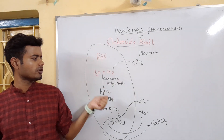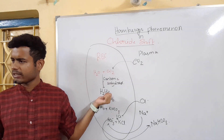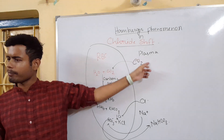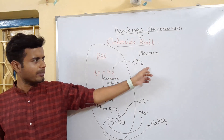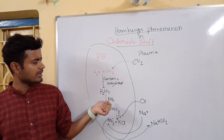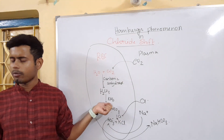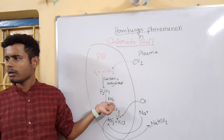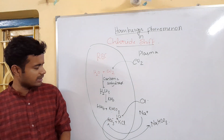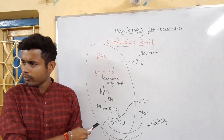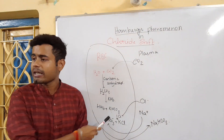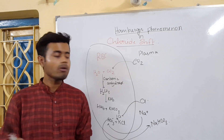It will combine H₂O and CO₂ into carbonic acid, H₂CO₃, and the CO₂ is coming from plasma. After forming carbonic acid, potassium attached to hemoglobin would react with it, and reduced hemoglobin would be formed along with potassium bicarbonate (KHCO₃).